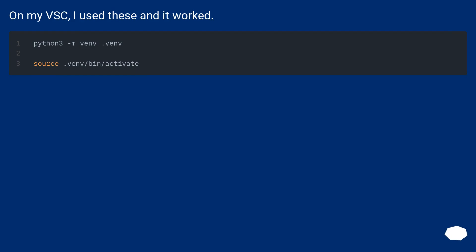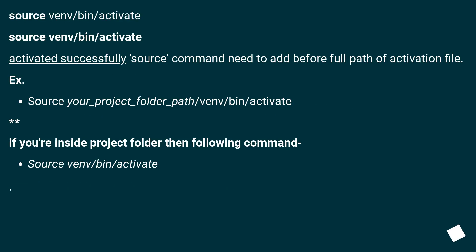On my VSCode, I used these and it worked: 'source venv/bin/activate'. Source command needs to be added before the full path of the activation file.